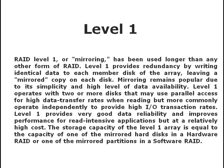RAID level 1, or mirroring, has been used longer than any other form of RAID. Level 1 provides redundancy by writing identical data to each member disk of the array, leaving a mirrored copy on each disk. Mirroring remains popular due to its simplicity and high level of data availability. Level 1 operates with two or more disks that may use parallel access for high data transfer rates when reading.